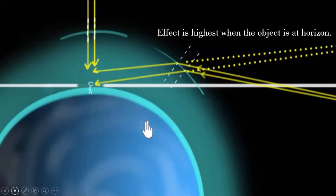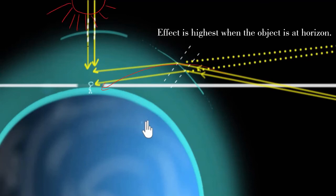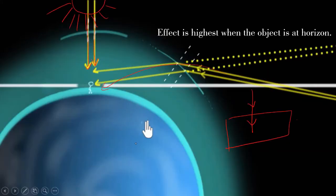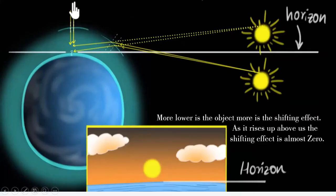The bending or shifting effect is highest when the object is at the horizon, because from the horizon the light rays bend and come to you. On the contrary, in the afternoon when the Sun is just above you, the light rays reach normally — and when a light ray reaches normally it does not get refracted. More lower the Sun is, more is the shifting effect. As it rises up the shifting effect becomes almost zero. Around noon at 12 or 1 o'clock, the Sun is just above your head so the shifting effect is negligible.